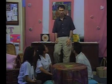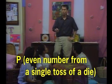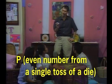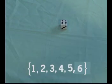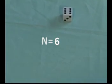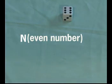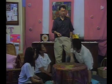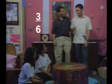Let's work with some examples. What's the probability of an even number resulting from a single toss of this die? The sample space is {1, 2, 3, 4, 5, 6}, so N equals 6. The sample points in the event are 2, 4, and 6, so n for even numbers equals 3. The probability of getting an even number from a single toss is 3 out of 6, or one half.